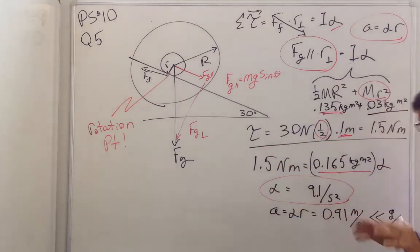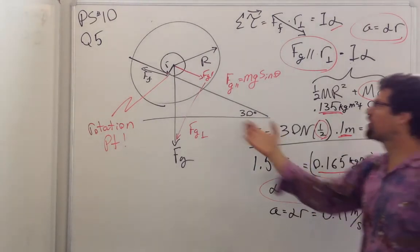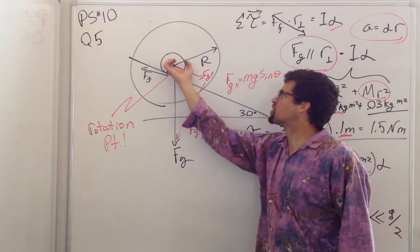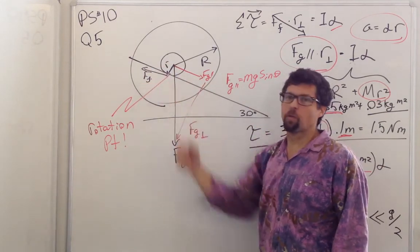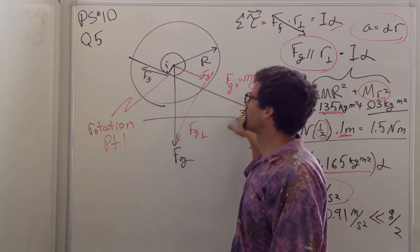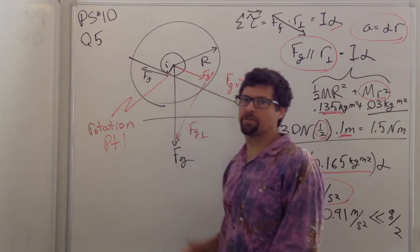And it's worth noting that it's much less than the gravity divided by two, five meters per second squared we get if this were sliding frictionlessly down the plane. So that frictional force is significant, because a lot of your potential energy is being turned into rotation rather than just linear velocity.